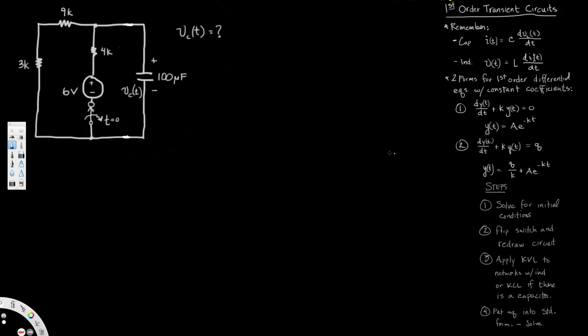The first step is to solve for the initial condition — what happens when time equals zero. When time equals negative infinity the switch is closed, so the energy is fully stored in the capacitor and it acts like an open circuit. That means there is no current flowing through it, so we can simply eliminate that branch.